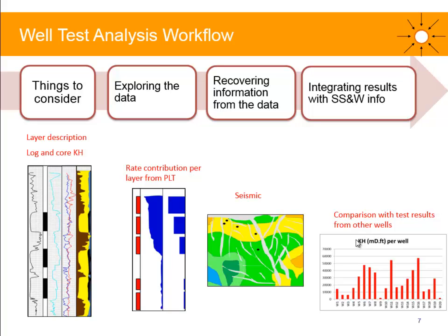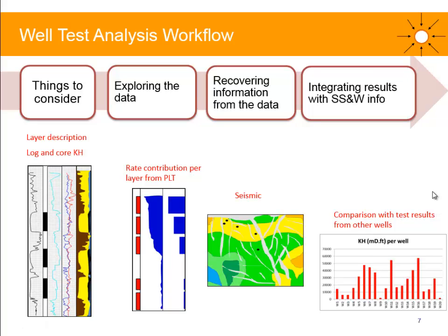The next step is to integrate the results with the subsurface and well information. You can use logs and cores and compare the permeability derived from those with the permeability derived from your well-test analysis. Sometimes they won't be consistent — that's fine, because logs and cores look at a couple of feet away from the well, while well-test analysis looks at kilometers away. Make sure your rate contribution per layer matches what you observe on the PLT. If you're using a multilayer model with non-uniform rate contributions across layers, your model needs to match the PLT. You can also use seismic — even if you don't see a particular fault on seismic, that doesn't mean the fault isn't there. And compare results from other wells to spot any issues.